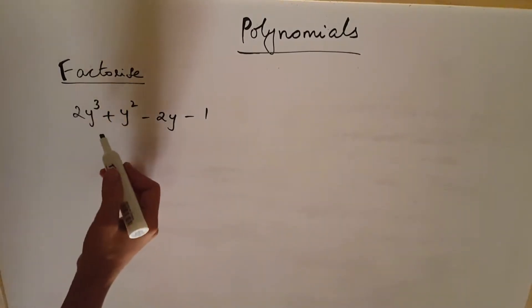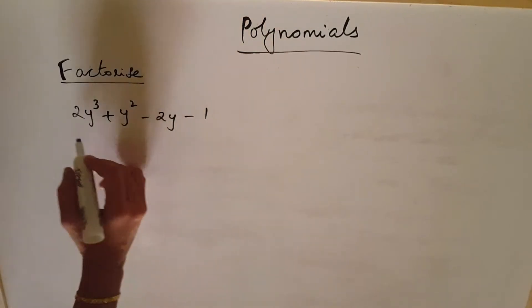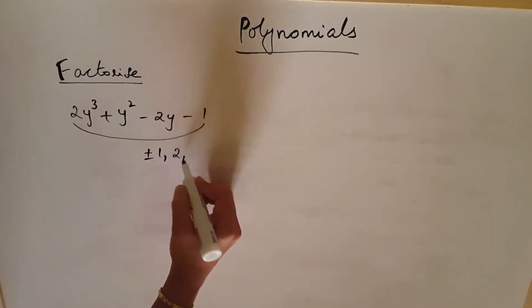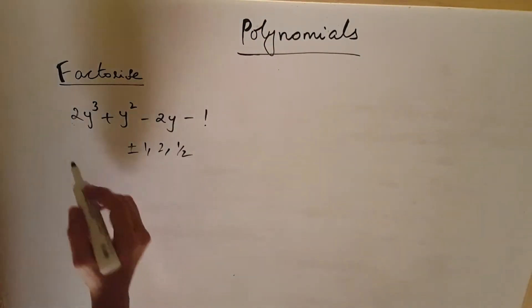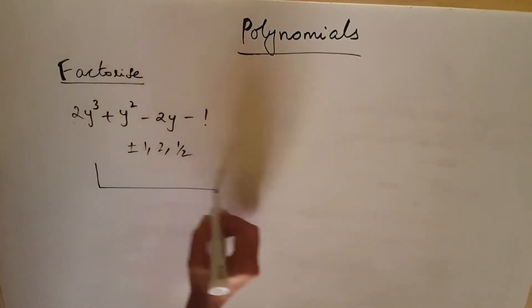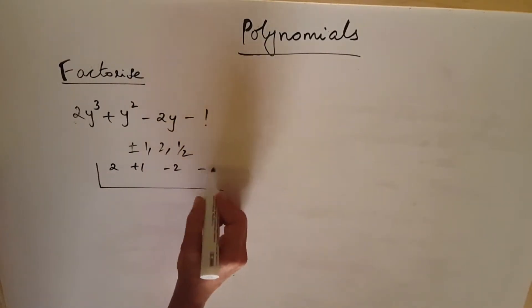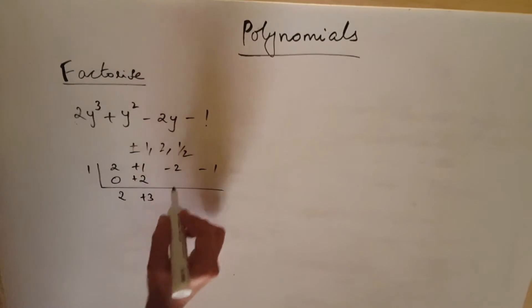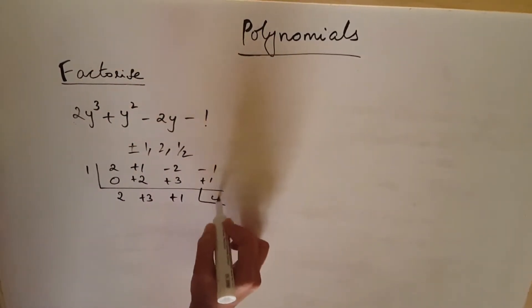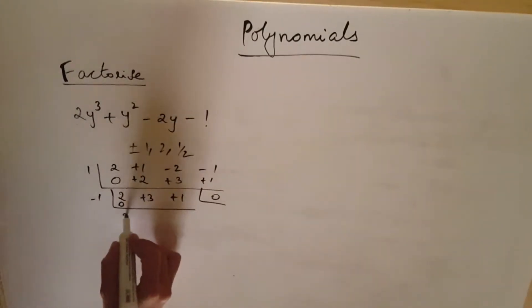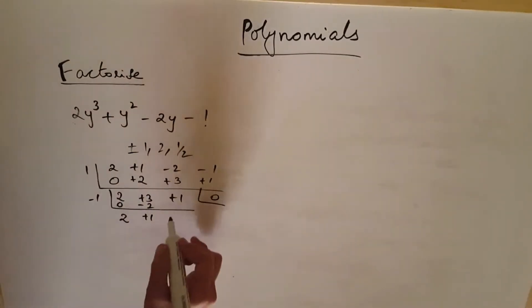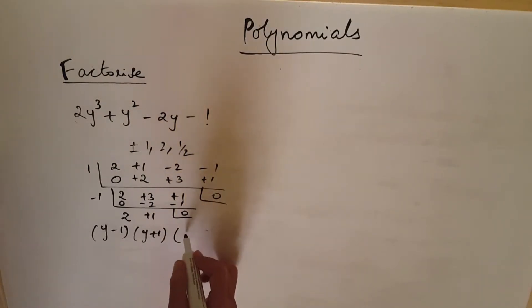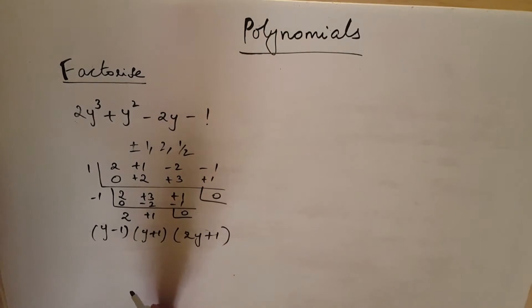In this question: 2y cubed plus y squared minus 2y minus 1. The factors to try are plus or minus 1, 2, and 1/2. Coefficients are 2, 1, minus 2, minus 1. Starting with 1: we get 2, 3, 1, remainder 0. So y minus 1 is a factor. Trying minus 1: we get 2, minus 2, gives minus 1, remainder 0. So y plus 1 is also a factor. The factors are y minus 1, y plus 1, and 2y plus 1.